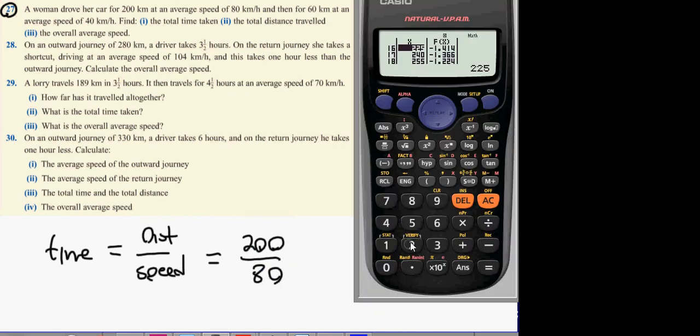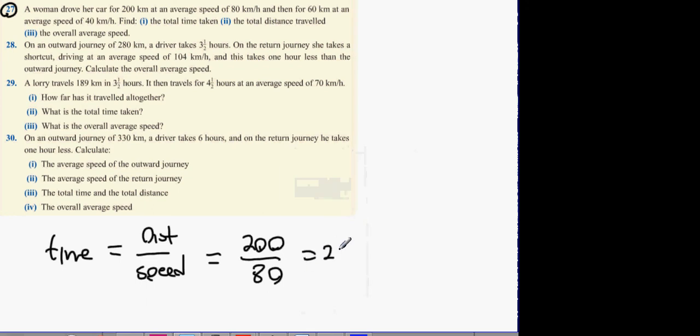So the first time is distance over speed. 200 divided by 80. Now, if you press it, it's going to give it to you in decimal form—that's where the mistakes come in. It says 2.5 hours, and that's the same thing as 2 hours 30 minutes.